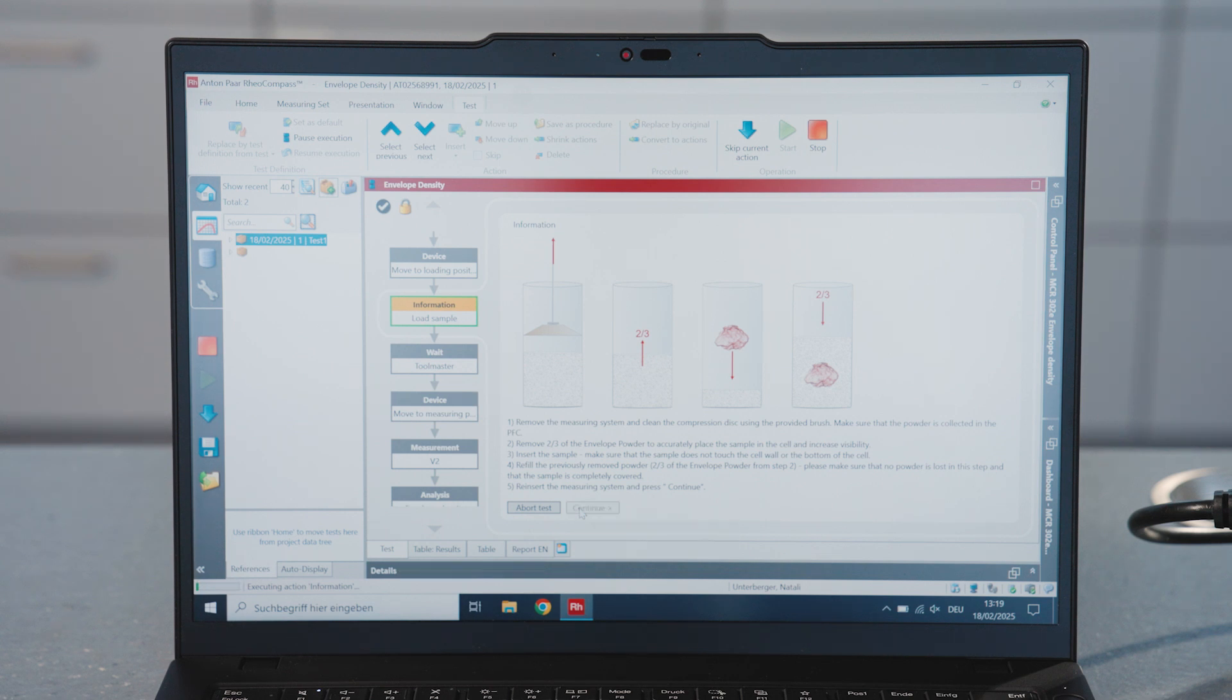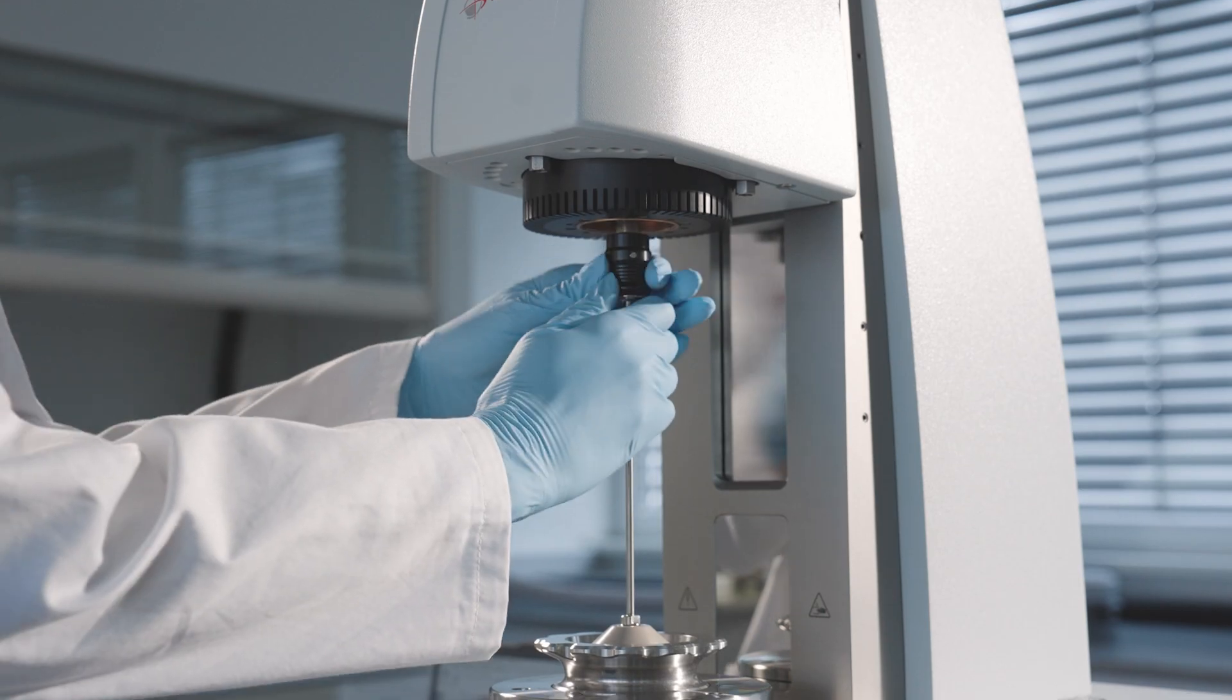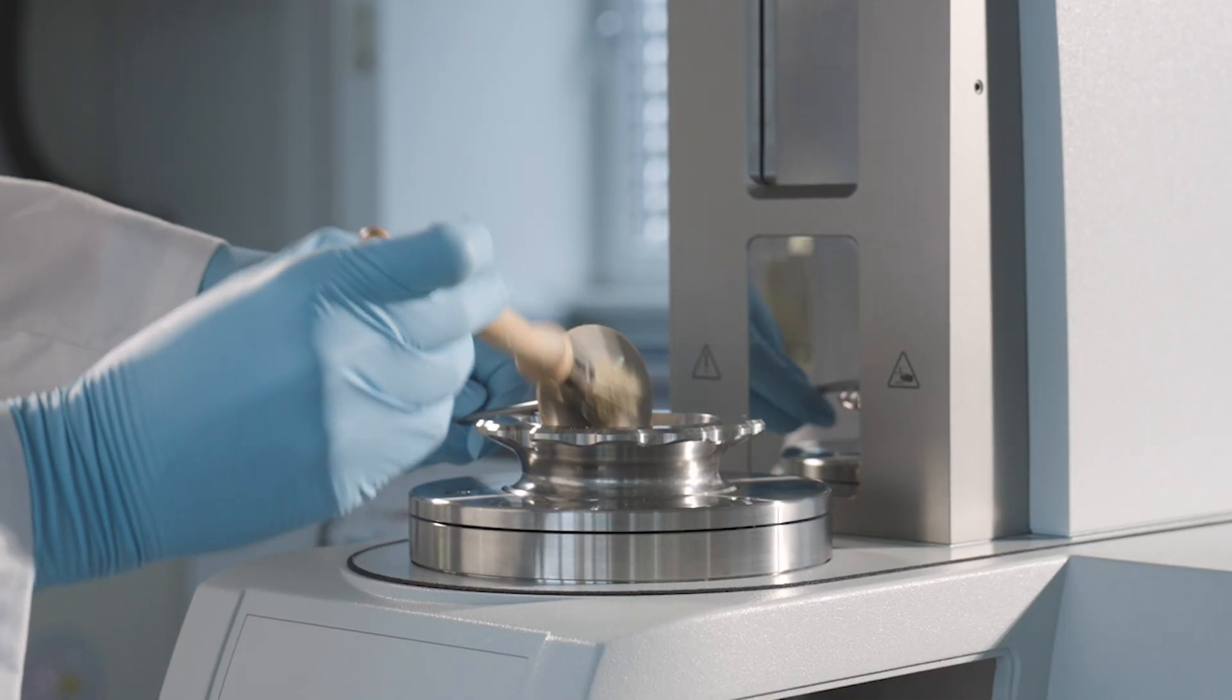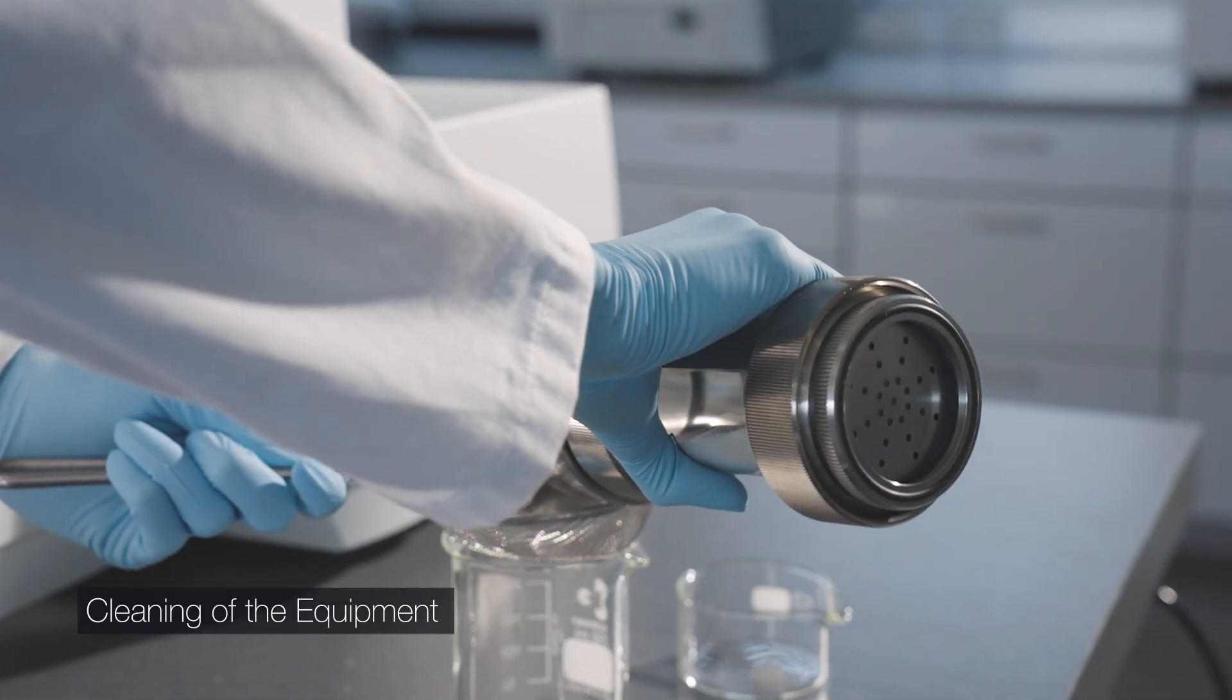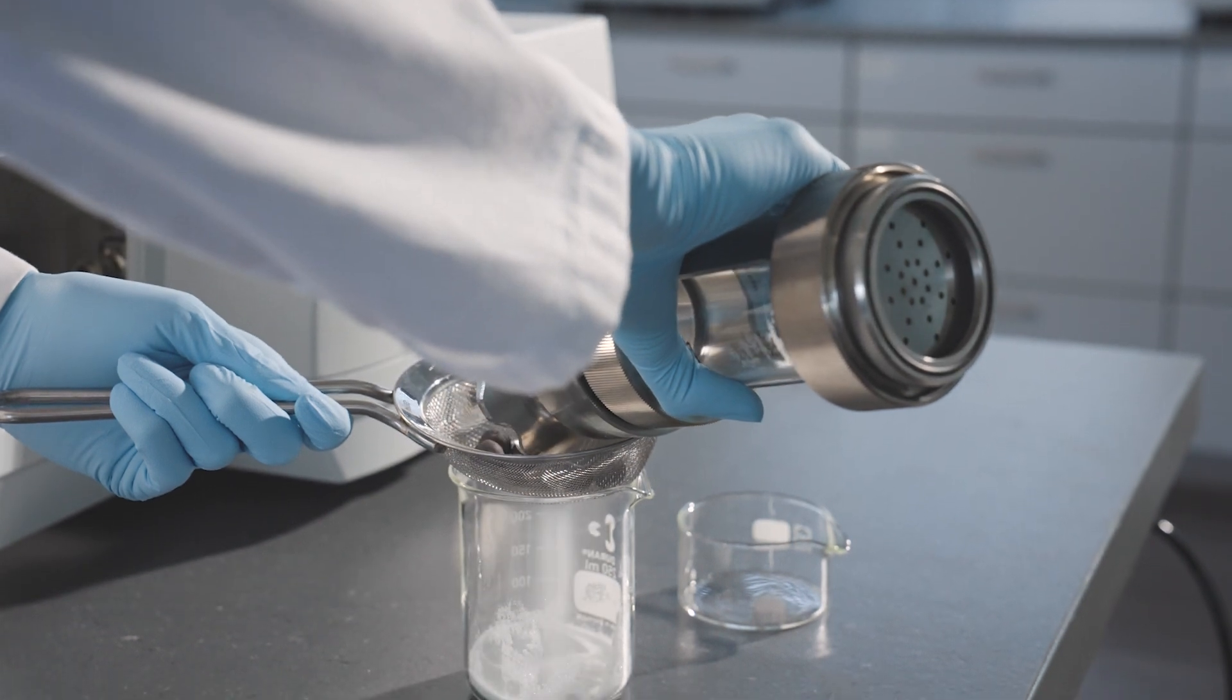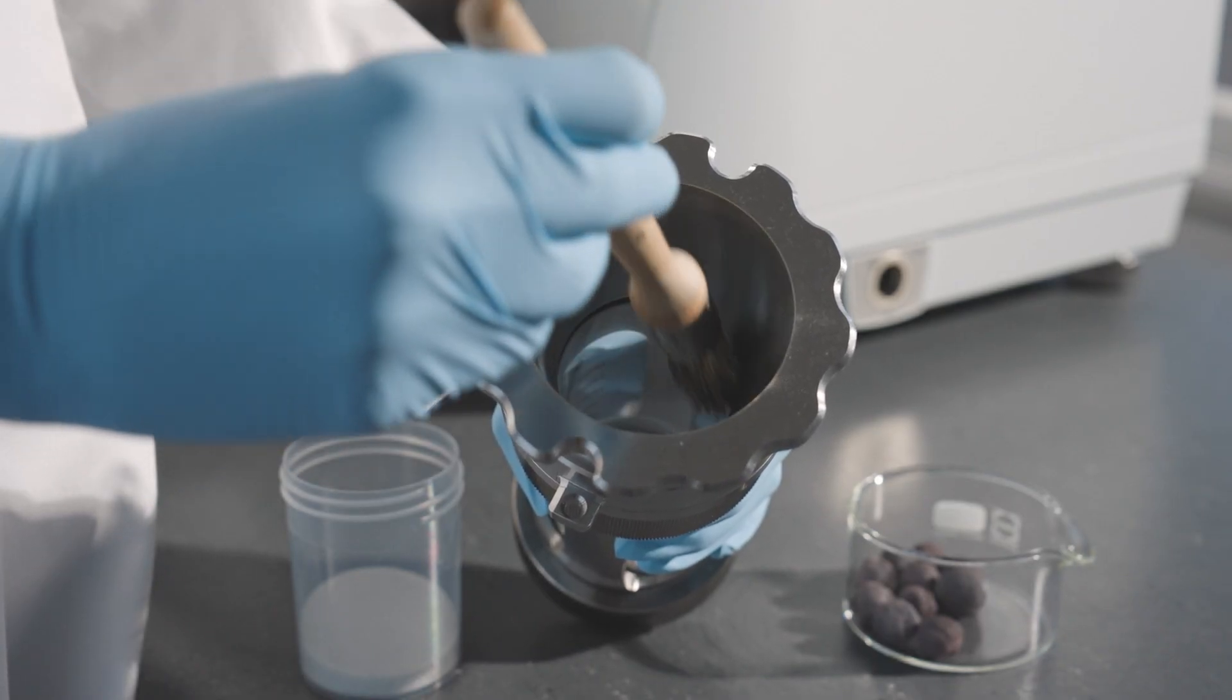Press Continue to finalize the measurement. Remove the powder flow cell. Use a cup and the separating sieve. Pour the entire filling of the measuring cell into the sieve. Use the brush for the final finish.